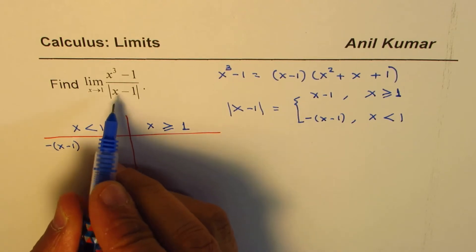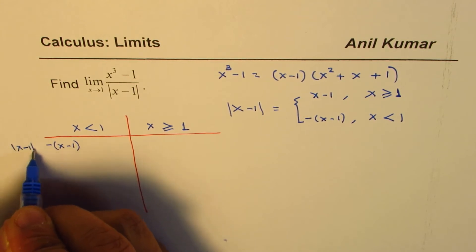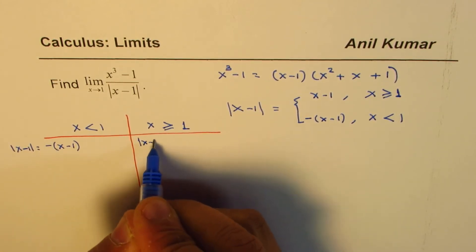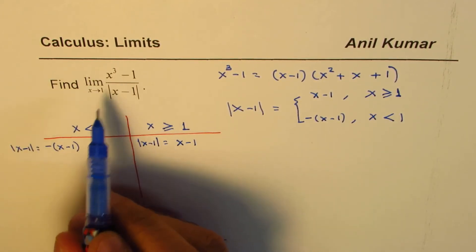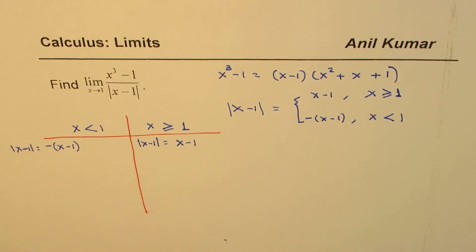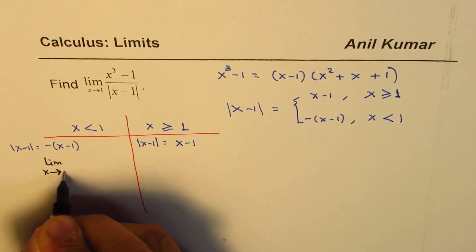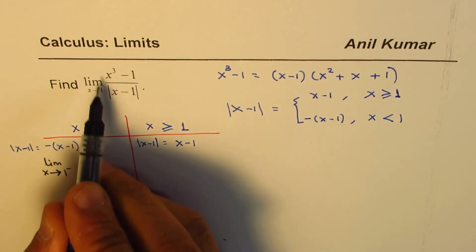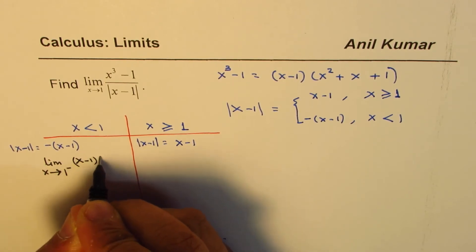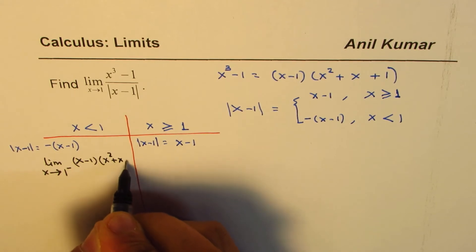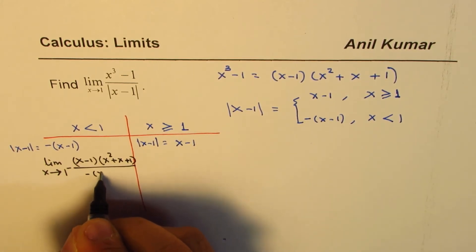When x is greater than or equal to 1, the absolute value of x minus 1 equals x minus 1. Based on this, we rewrite the question. When x is less than 1, we write the limit as x approaches 1 from the left, where x cubed minus 1 is written as x minus 1 times x squared plus x plus 1, divided by negative x minus 1.